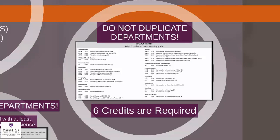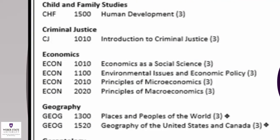The next portion of your breadth requirements is the Social Sciences, found on page 3 of the General Education Requirement Sheet. In this area, you will need to complete 6 credit hours, taking 2 courses. Please note that Electrical Engineering majors are required to take Economics 2010, which will fulfill 3 credits of your Social Science requirement.